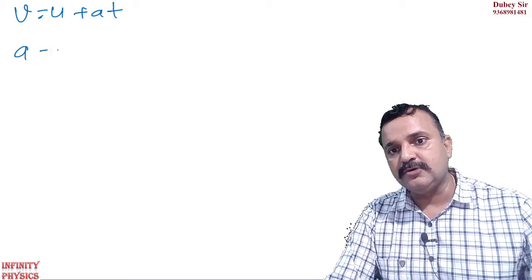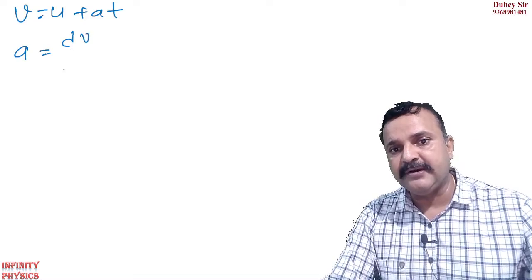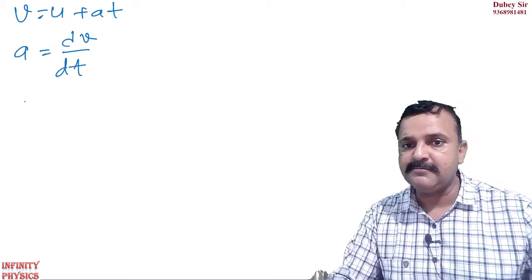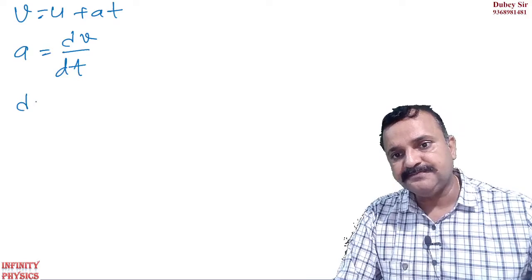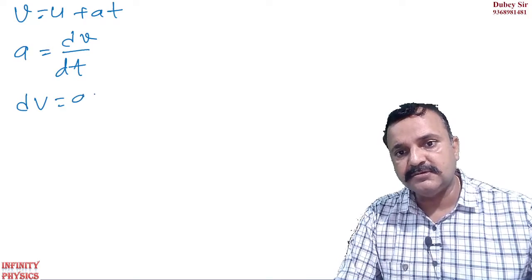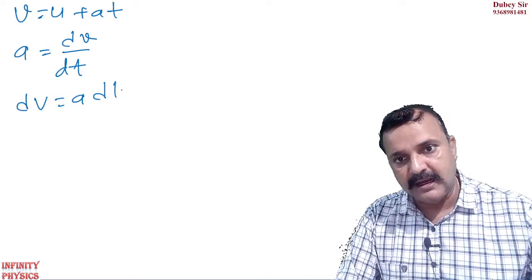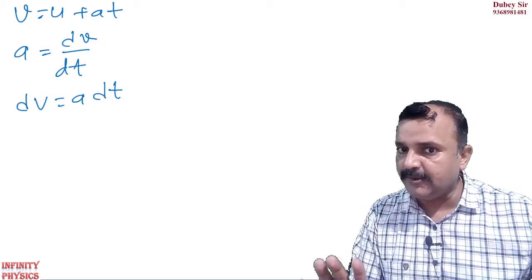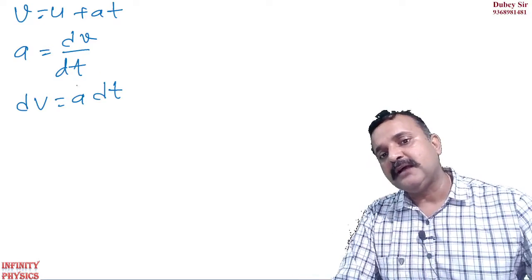As we know, a is equal to dv upon dt. We have already know that. Aap nai sakti ho, dv is equal to a dt. Haan ya na? dv is equal to a dt nai sakti hain.